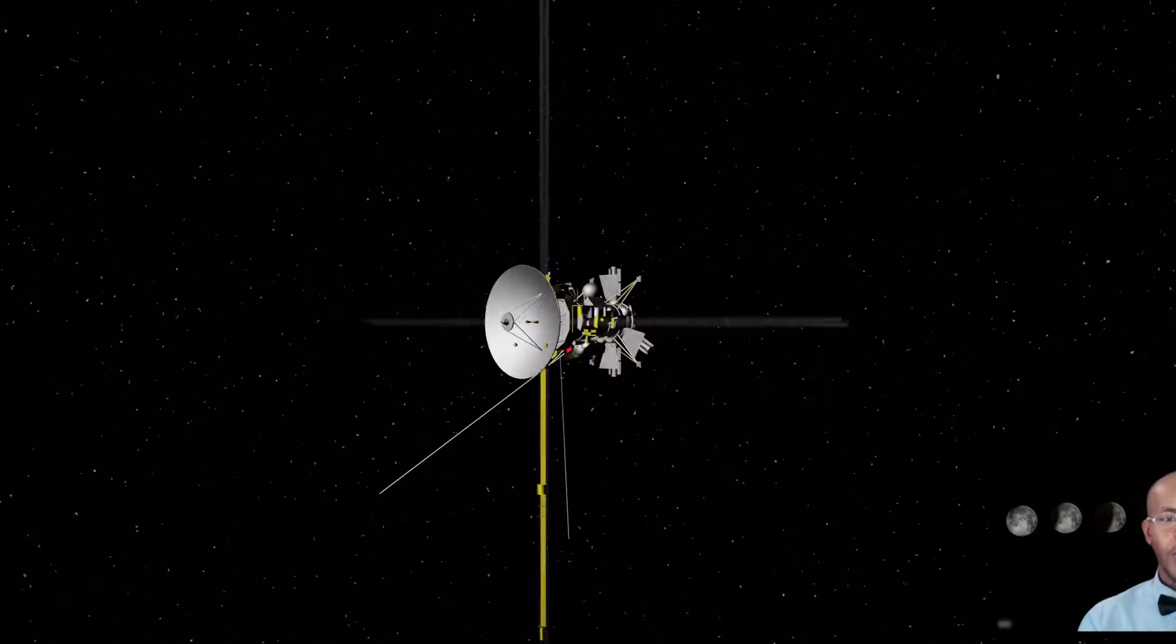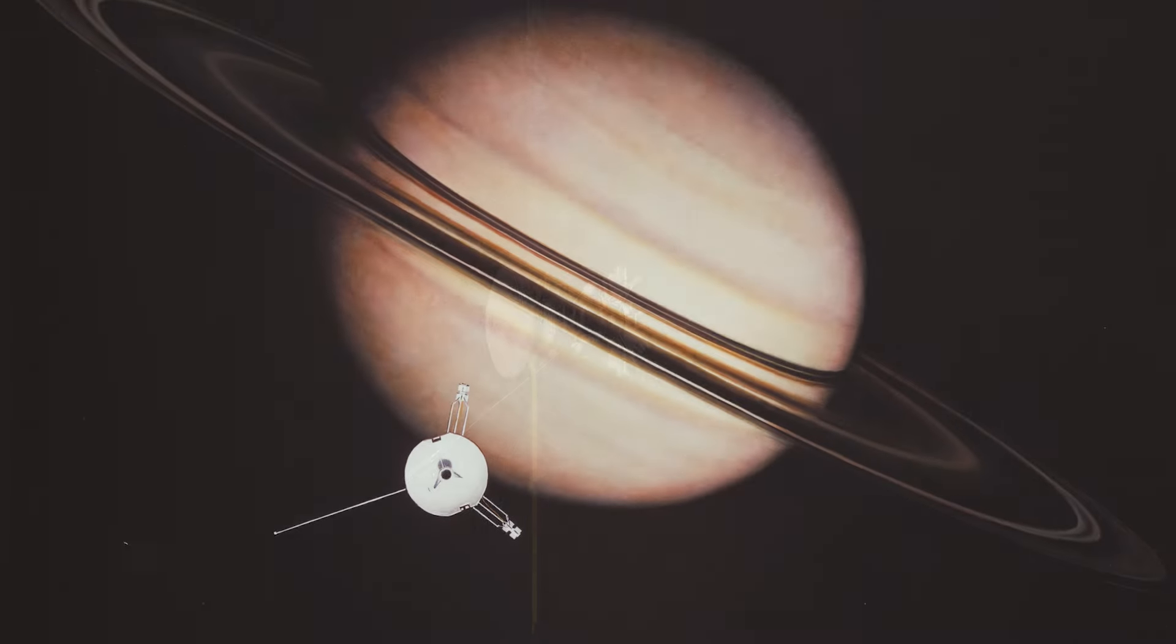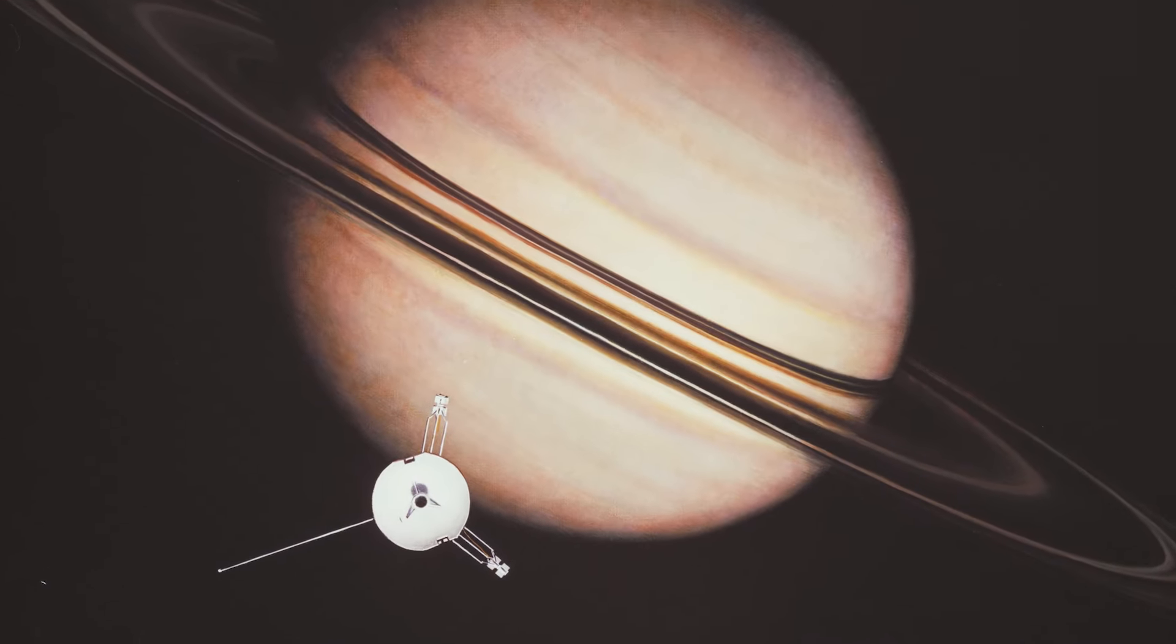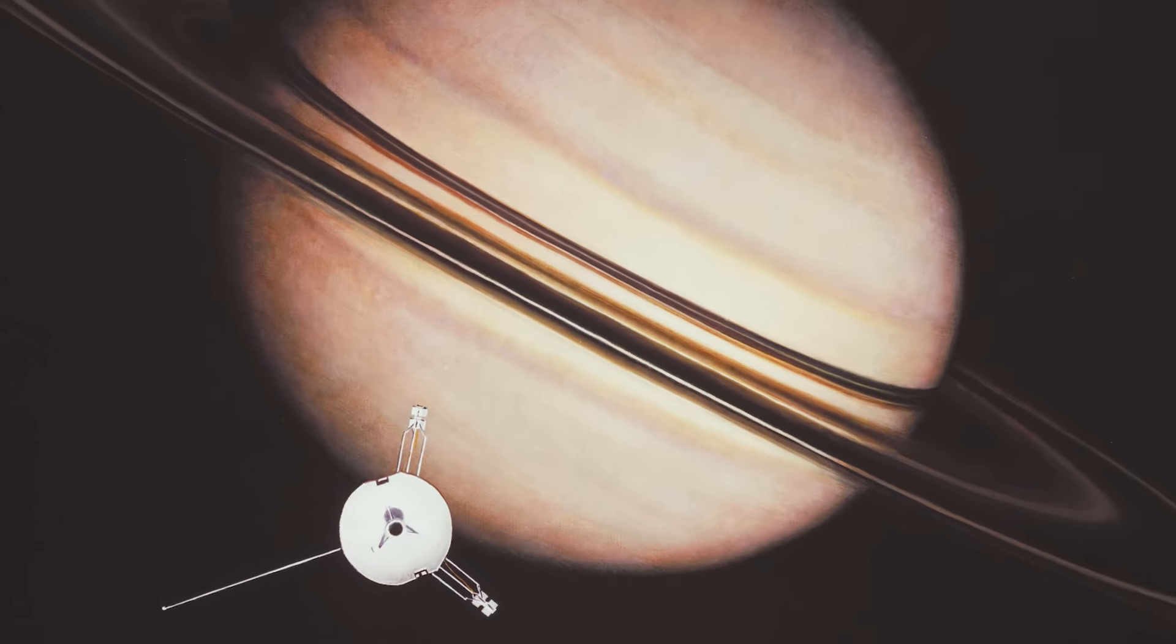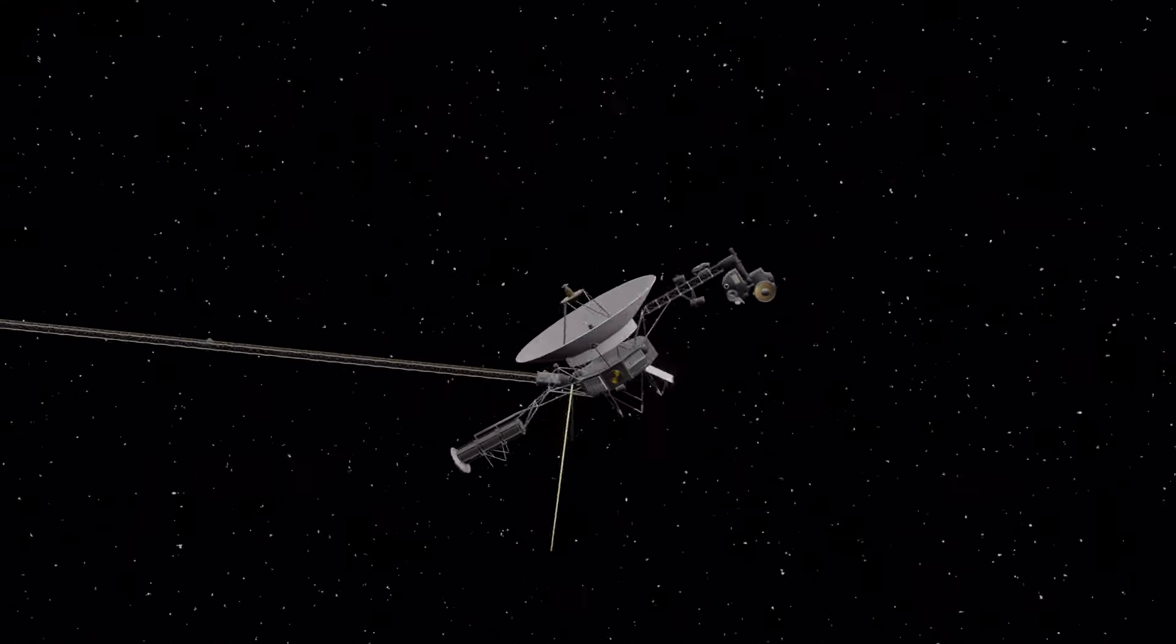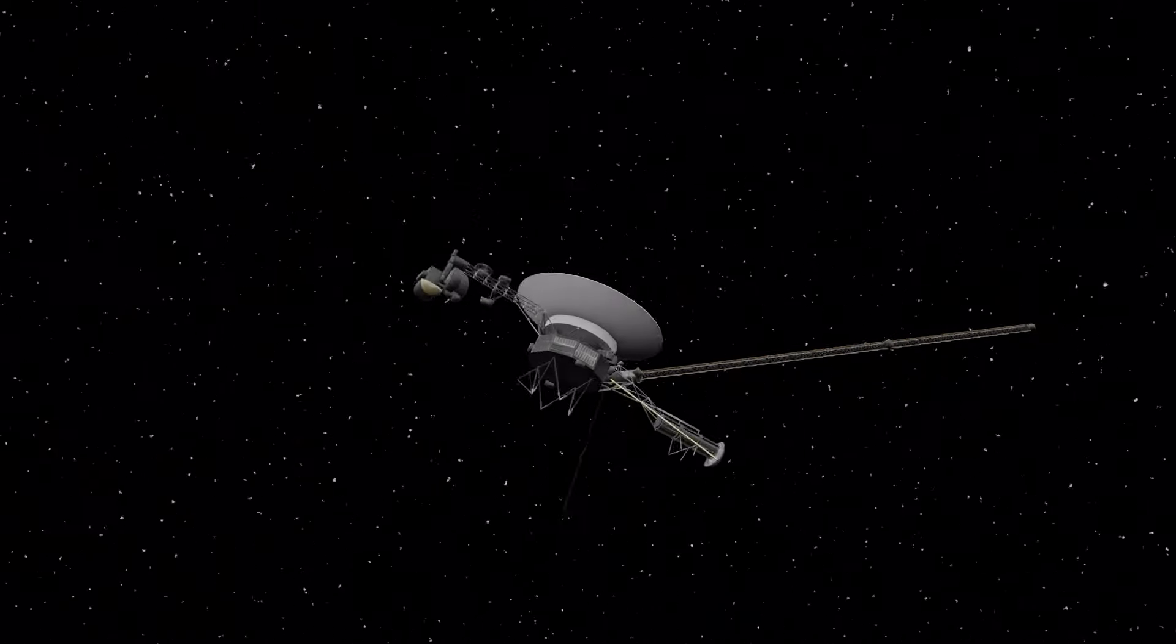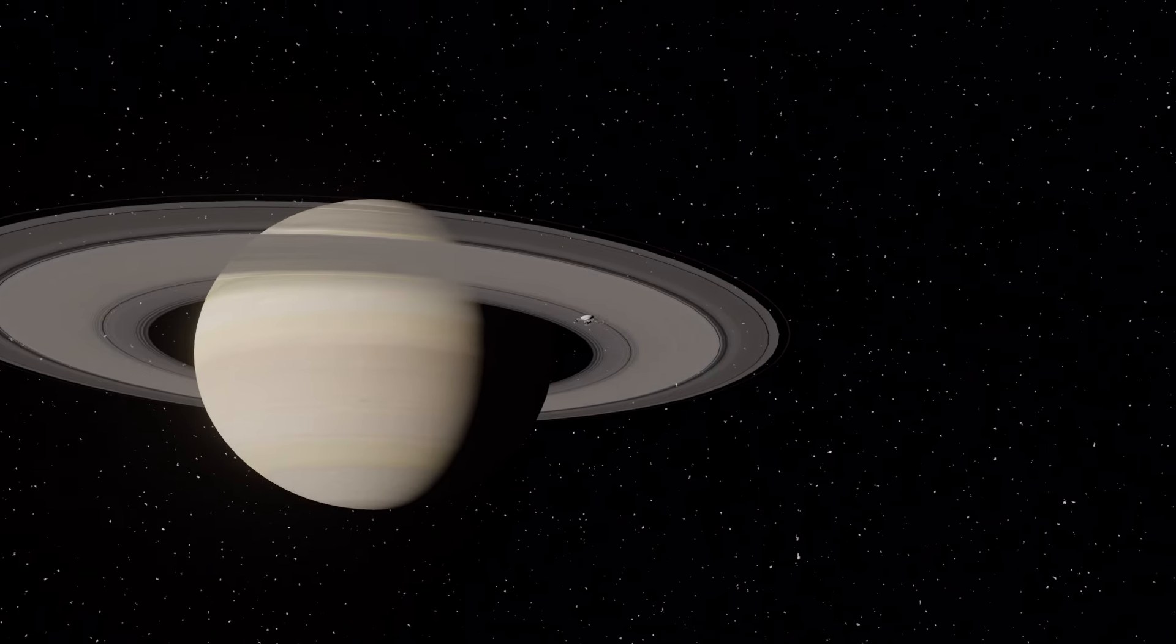Hey, welcome back. Four robotic spacecraft have visited Saturn. NASA's Pioneer 11 provided the first close look in September 1979. NASA's twin Voyager 1 and Voyager 2 spacecraft followed up with flybys nine months apart in 1980 and 1981.